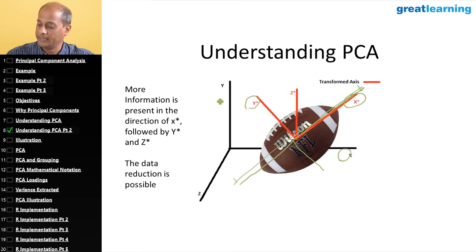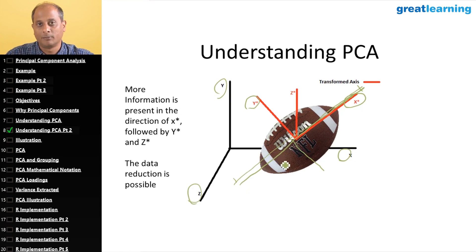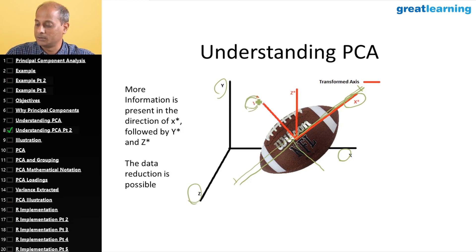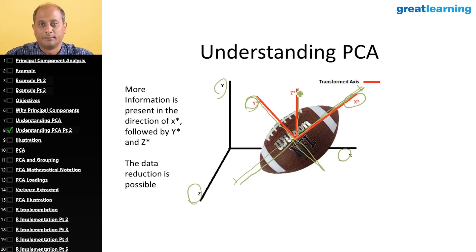The second principal component tries to capture the y-star direction of information. x, y, and z are combined in such a manner to explain the remaining variance in the data, and the highest variance in the remaining information is y-star. So the second principal component will point in that direction and capture that information. The third principal component covers the remaining direction. To understand PCA, imagine a tennis ball — it's a sphere where every direction is important and dimensions cannot be reduced.